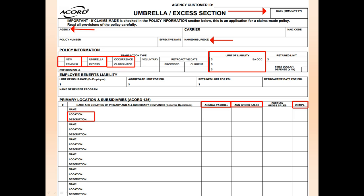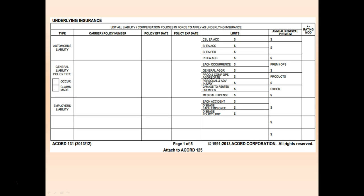Moving on to the most important section of the page, you'll now be completing the underlying insurance information. The very first block is for your automobile liability policy information. Be sure to indicate the name of your carrier and the policy number, the policy effective and expiration date, the limits of liability, and the annual premium.